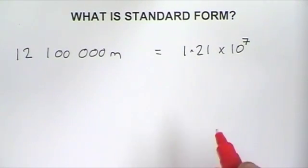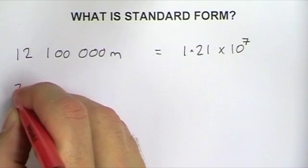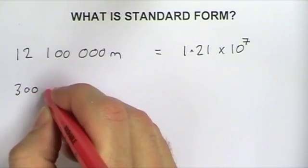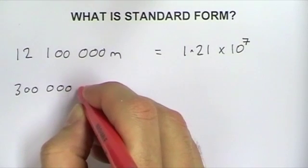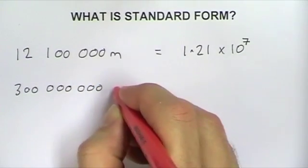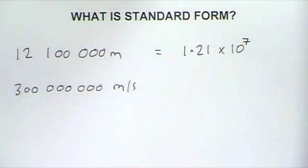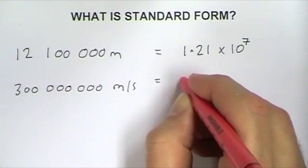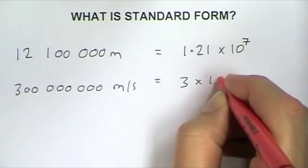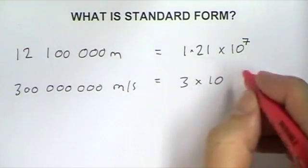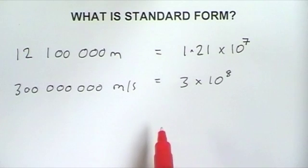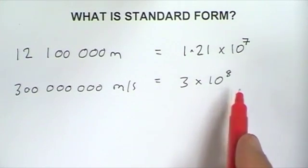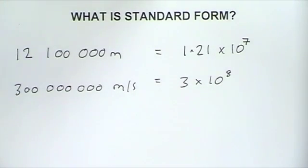The speed of light we'd normally write as approximately 300 million metres per second. Scientists would write that as 3 times 10 to the power of 8, meaning it's 3 times 10 times 10 times 10, a total of 8 times.